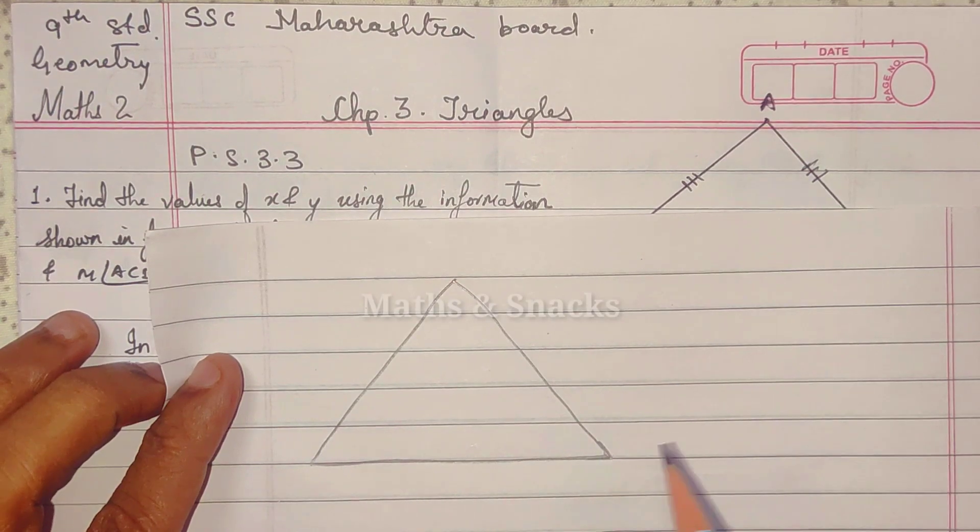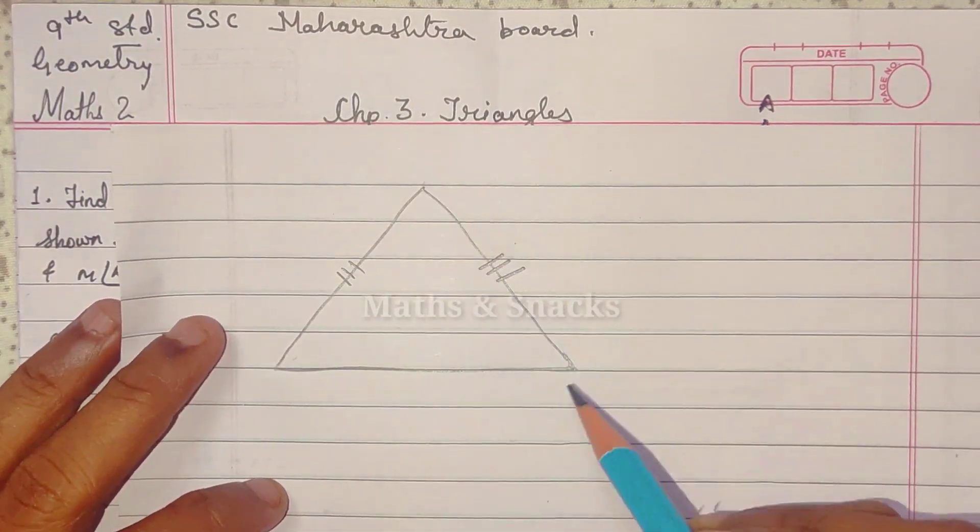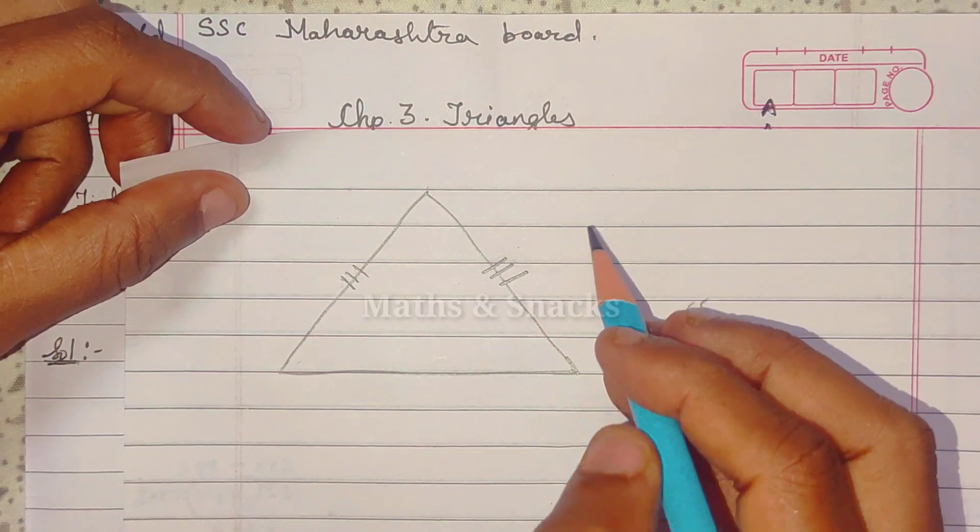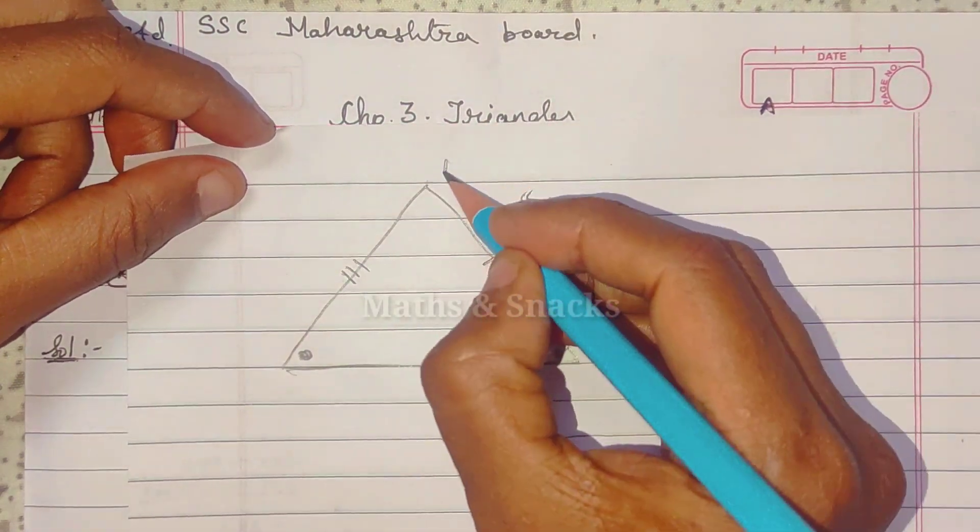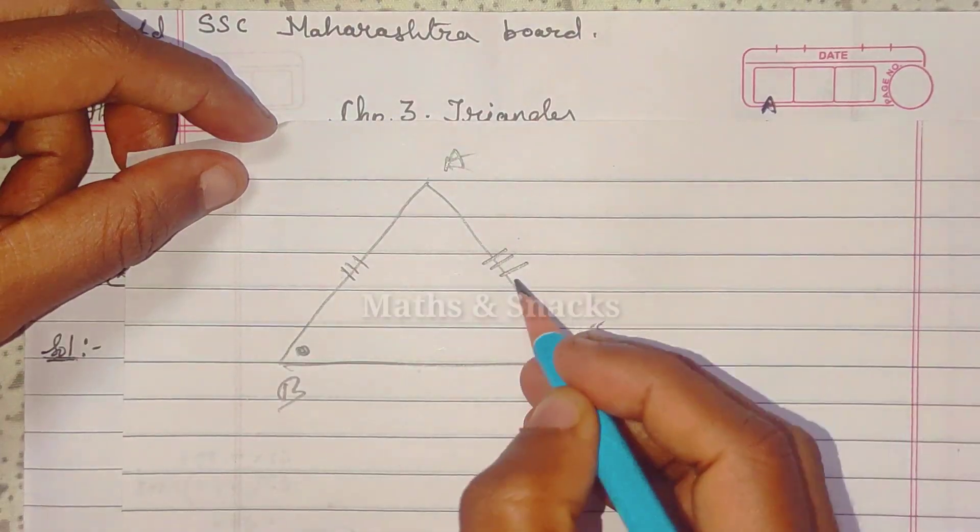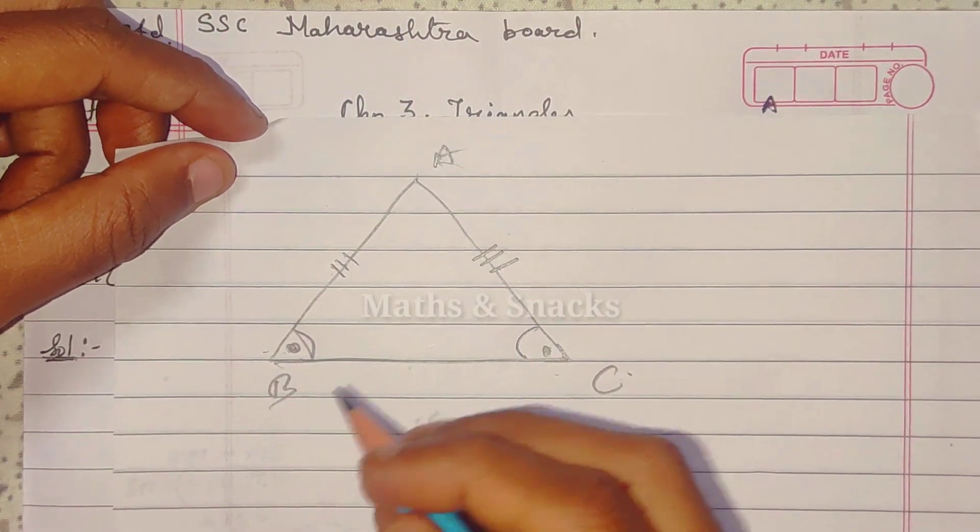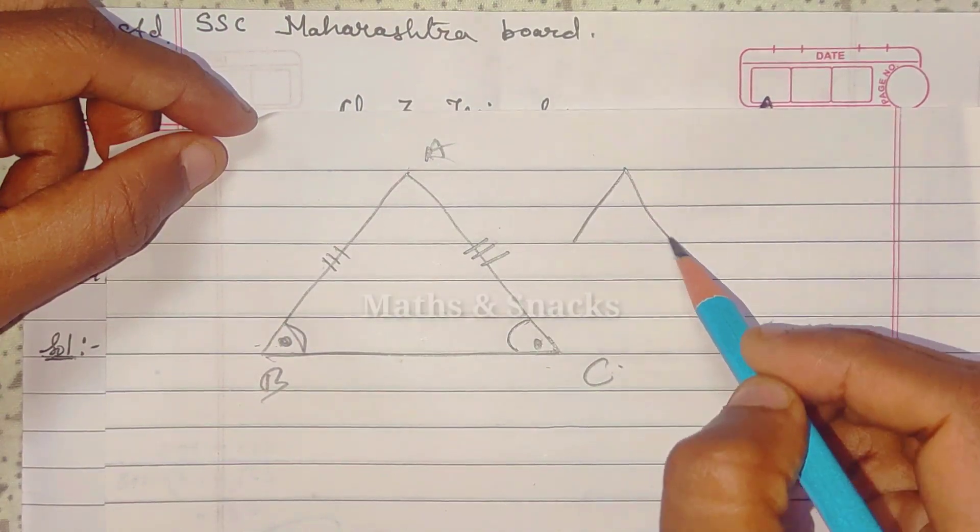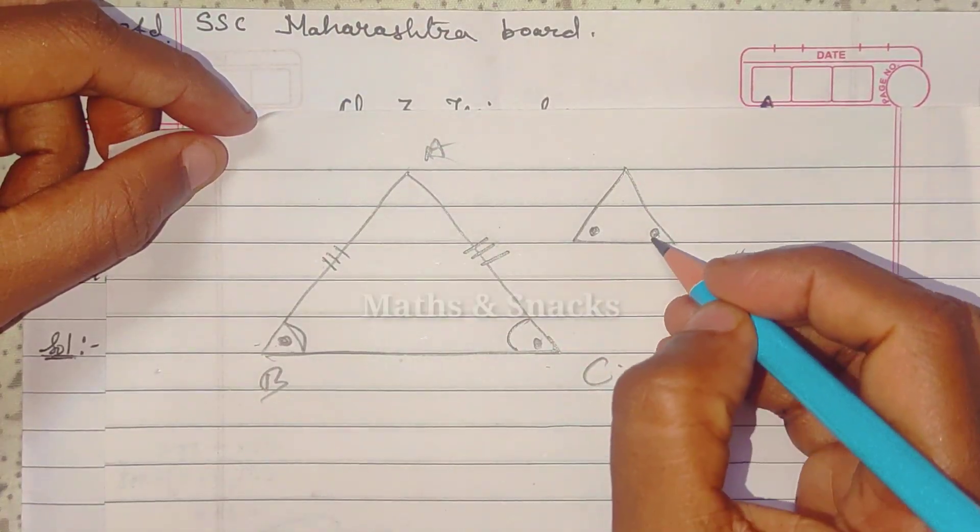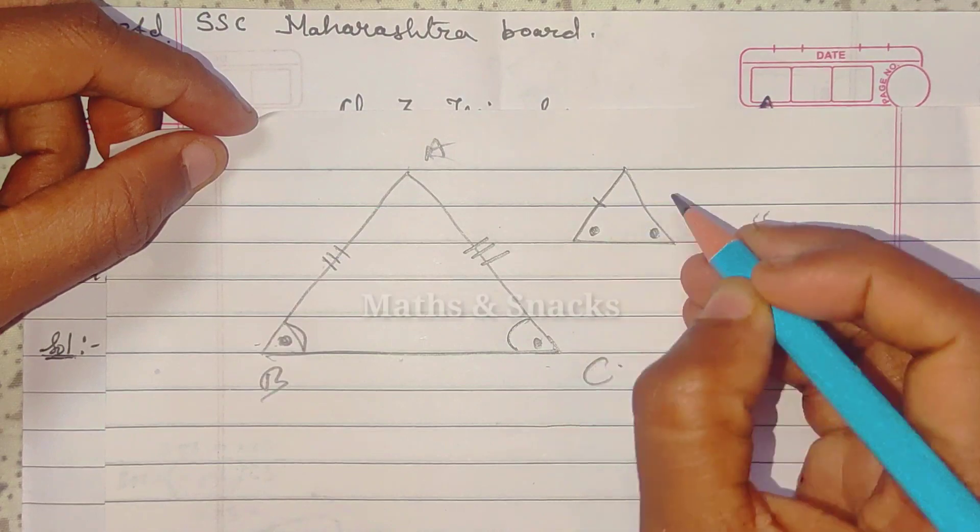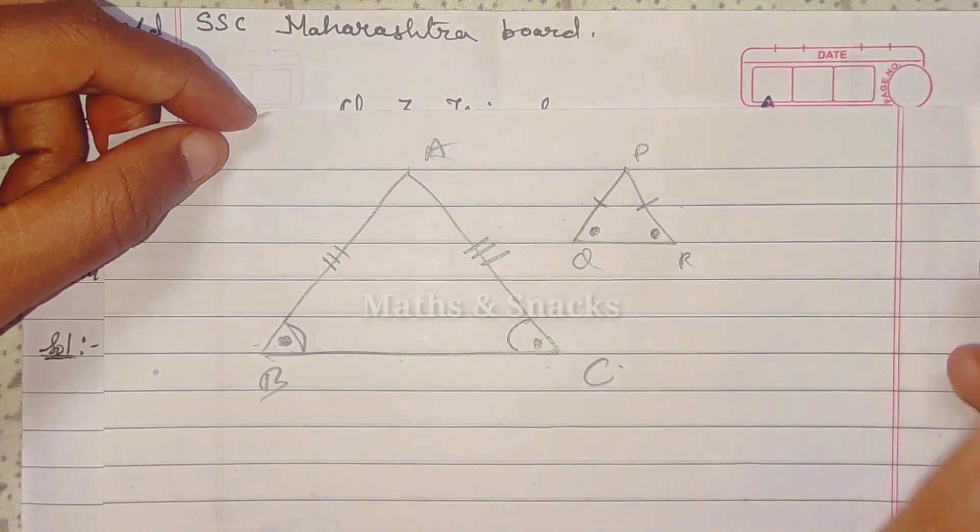You all must be familiar with the word Isosceles Triangle. Isosceles Triangle ka matlab kya hota hai? Whenever you have any triangle and its 2 sides are equal, if any 2 sides are equal, and angles opposite to those sides - if it is A, B and C, then the angles opposite to AC and AB are congruent to each other. This is whenever you hear the word Isosceles Triangle. If someone tells you this triangle has 2 equal angles, that means it's isosceles because the opposite sides will also be equal to each other. So such kind of triangles are said to be Isosceles Triangles.